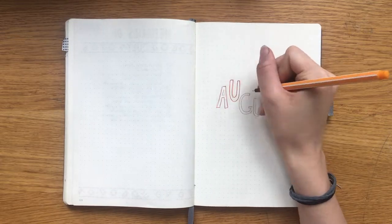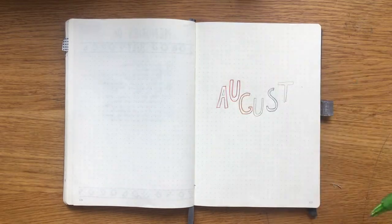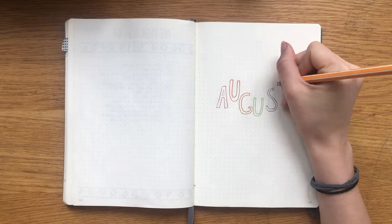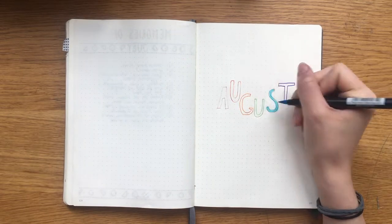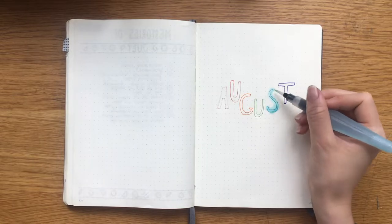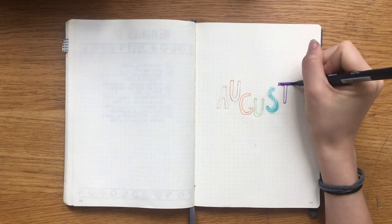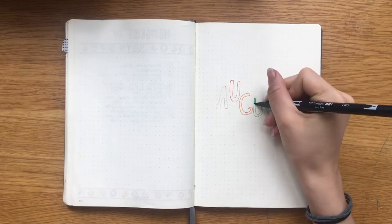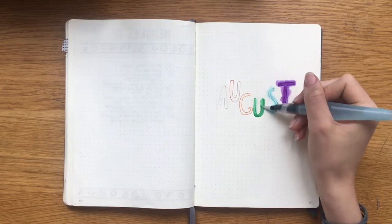So first off I am outlining the letters of August in the different colors of the rainbow and then I am filling them in with my Tombow pen. And since Tombow pens are water based, that means that you can blend them out like watercolors and that is what I'm doing right now.